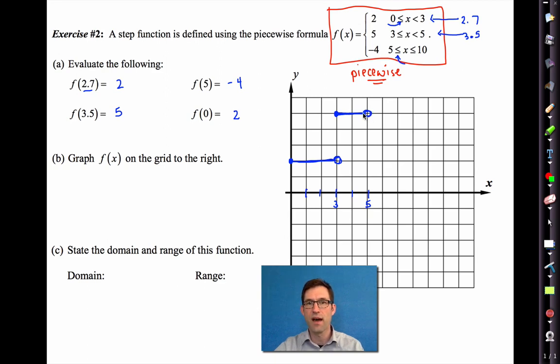But from 3 to 5, from 3 to 5, we know that we have an output of 5. So all along here, it's just going to be an output of 5. But again, the 5 isn't included. x equals 5 is not included. And then from 5 to 6, 7, 8, 9, 10, we'll have outputs of negative 4. 1, 2, 3, 4. So it'll look something like that. One of the keys and one of the trickiest things for students are these open circles.